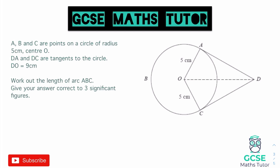On to question three — this one requires a calculator. A, B and C are points on a circle of radius 5 centimetres, centre O, with the radius labelled on the diagram. DA and DC are tangents — tangent questions appear a lot in these exam questions. DO is 9 centimetres, which isn't on the diagram, so we label that on straight away. We need to work out the length of arc ABC.